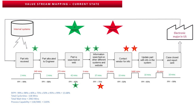The rolled first pass yield was also low. Part search on the web had a 40% first pass yield, meaning engineers found the information 40% of the time. When searching the customer website and other internal tools, information was found 75% of the time. When contacting the customer via email, information was received 50% of the time. This resulted in a rolled first pass yield of only 13.68%.